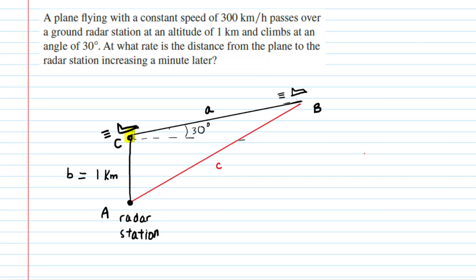We have the airplane beginning at point C and then ascending at a 30 degree angle until it reaches point B. Directly beneath point C was that radar station at point A, and that altitude was 1 kilometer. We've also labeled the side lengths with a, b, and c opposite of their corresponding angles.